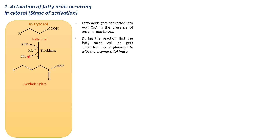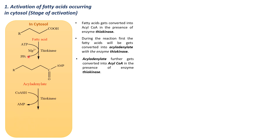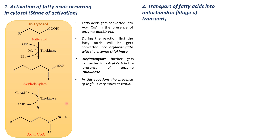When ATP is converted to PPi, acyl adenylate is formed. In the next step, the formed acyl adenylate undergoes further reaction in the presence of the enzyme thiokinase to get converted into acyl coenzyme A as the final product. In both reactions, the presence of Mg2+ is very much essential.